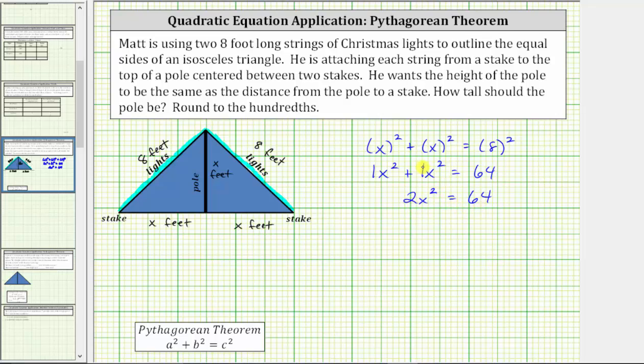The next step is to isolate x squared by dividing both sides by two. Simplifying, two divided by two is one, one times x squared is x squared. We have x squared equals 64 divided by two, which equals 32.